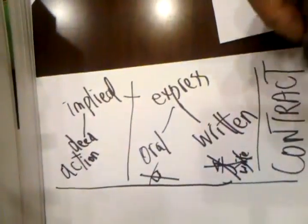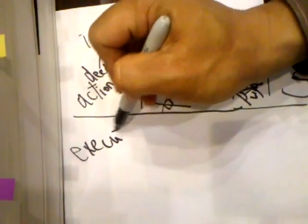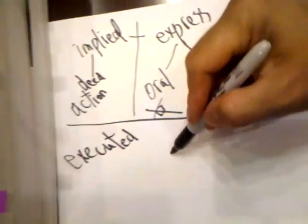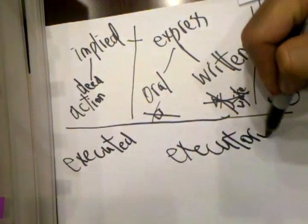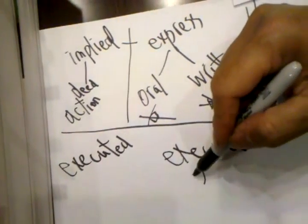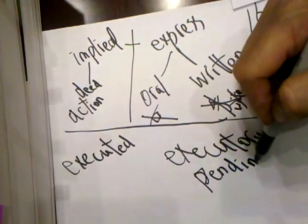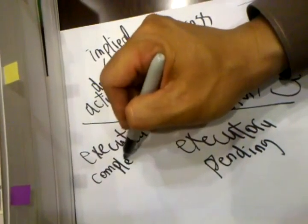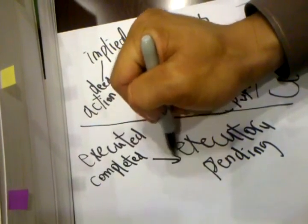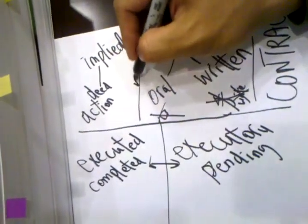And this is called contract, but in other words, contract also we use executed and executory, that means this is like a pending, like a pending situation. It's not yet a done deal. Here, it is completed, so it's better that you remember these keywords. It is not equal though, it is like opposite though.